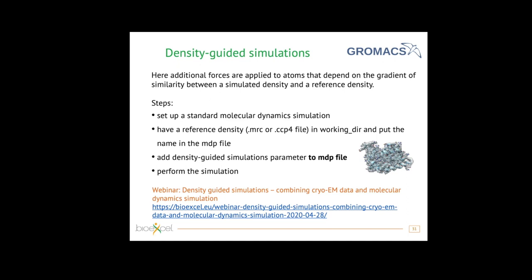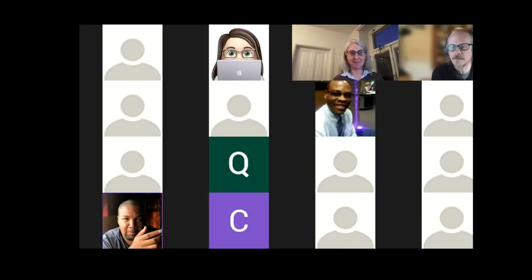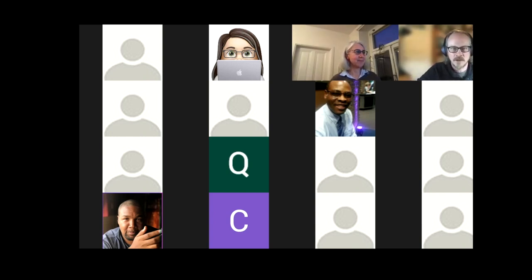Jason: Thank you very much, Alessandra, for this great introduction to getting started with GROMACS. GROMACS 2021.3 is available in SBGrid, and we also have 2020.6 for a more stable version as recommended. Be sure to join us next week where we hear about temperature-sensitive TRP channels from the Sobolevsky lab. Thank you very much.